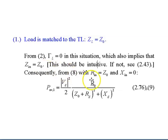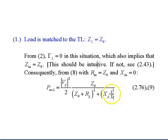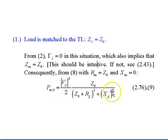When Z_in equals Z_0, R_in equals Z_0 and X_in equals zero, because it is purely resistive with no reactive component — no +j or −j terms. Therefore, P_average for a matched load is calculated using Equation 9.